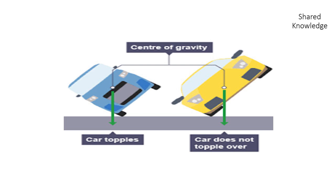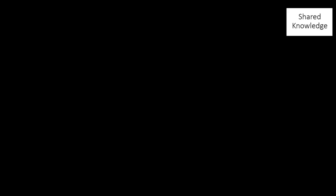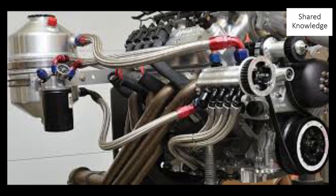In the dry sump system, the oil tank is separate from the crankcase, so the engine can be mounted lower, bringing the center of gravity down. Also, because the crankcase and oil storage are separate, you can balance the weight on both sides of the engine, making it more stable overall.